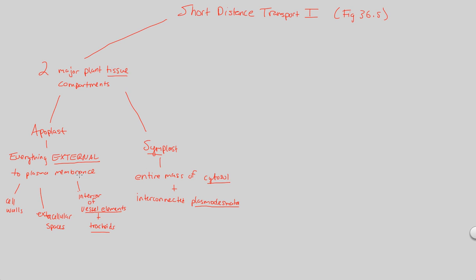Figure 36.5 really helps you visualize the difference between these. There are three basic routes we'll cover today for transport within a tissue and an organ. Short distance transport stays within a tissue or organ — we cannot go from the root all the way to the top of the highest leaf. We're talking about transport within a leaf or within a branch. Long distance transport between tissues and organs will come later.